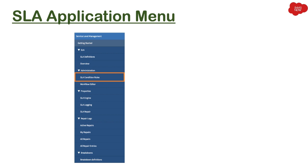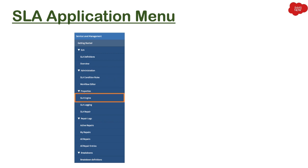Then we have 'SLA Condition Rules' under the Administration section, where you can define different condition rules for SLA. We also have the 'Workflow Editor' module, which takes you to the workflow section — it is not specific to SLA, but by default it comes with two default SLA workflows. The next section is Properties, which has modules like SLA Engine, SLA Logging, and SLA Repair. If you want to change properties for these modules, you can do so in this section.